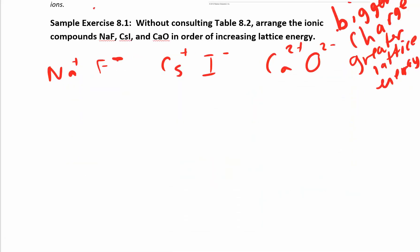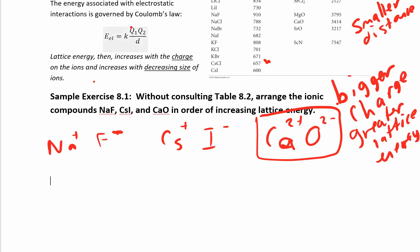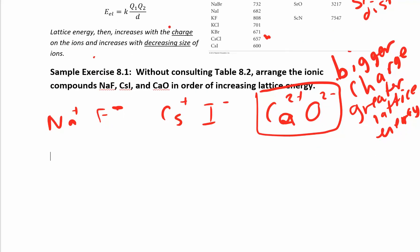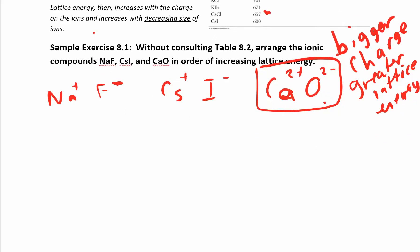We're also going to have to look at the distances. Right away, we know that CaO is going to have the highest lattice energy because it has the biggest charges, plus two and minus two. When you look at your electrostatic energy, a bigger number on top is going to have a bigger difference. Plus two minus two, this should have the highest lattice energy.